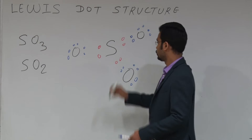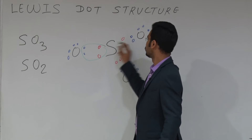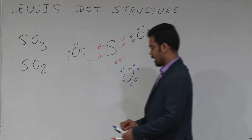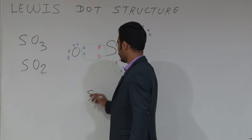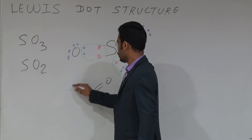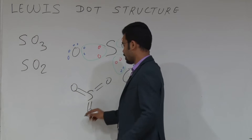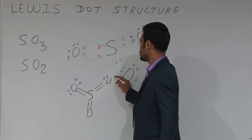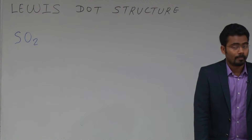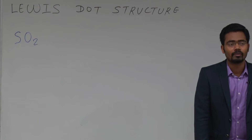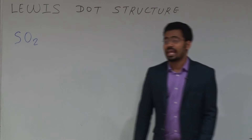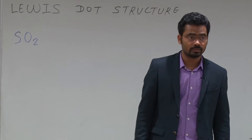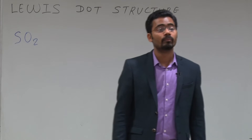So this is the bond. You can draw it like this — sulphur double bond O, double bond O, double bond O. How many lone pairs? All the oxygen atoms have 2 lone pairs. You can form the coordinate bond, but since sulphur belongs to the third period, expansion of the octet occurs, so there is no need to draw the coordinate bond.